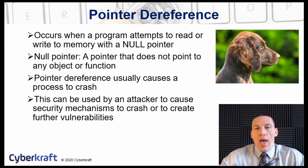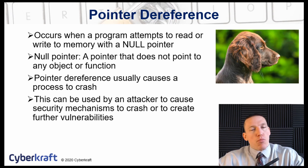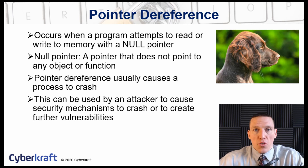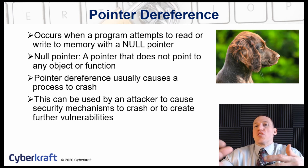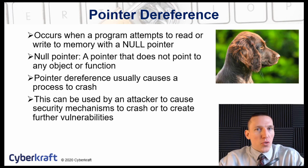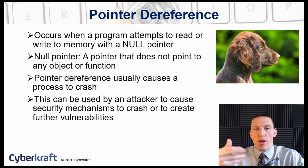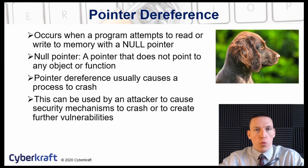If there's also improper error handling — where an error code shows additional information or creates additional security vulnerabilities — this can be very useful for the attacker. Pointer dereference causes the pointer, which the program uses to access memory, to become null or point to nothing.